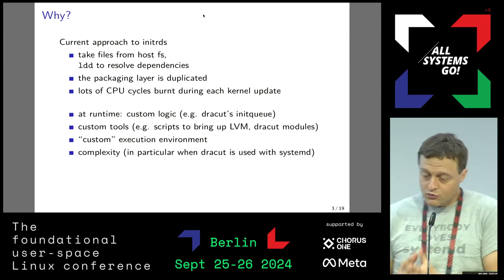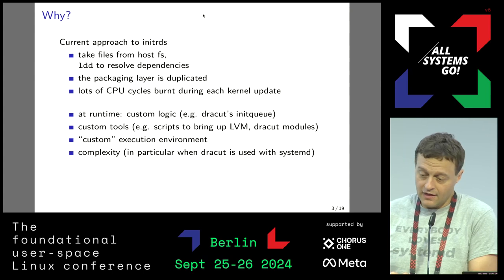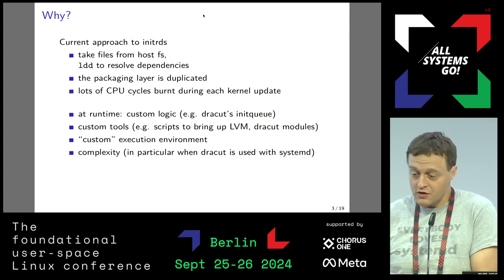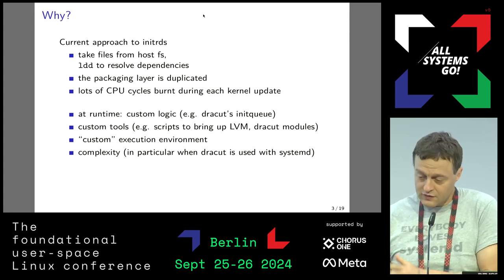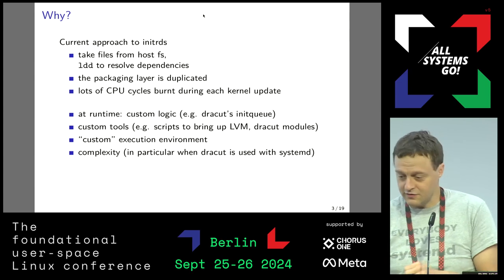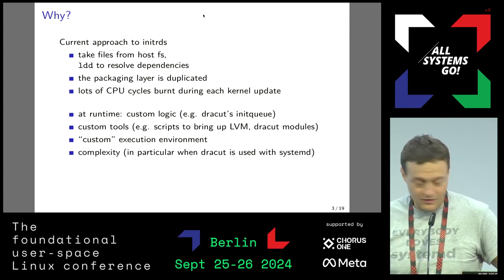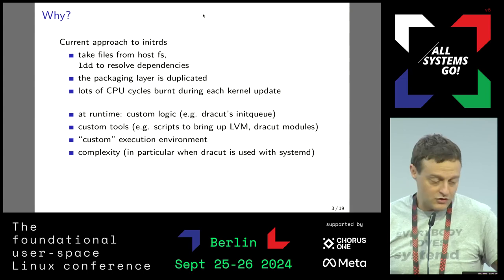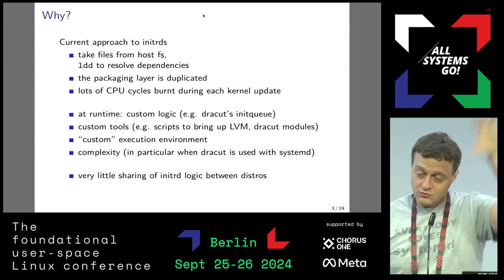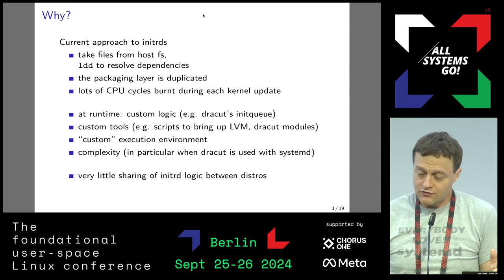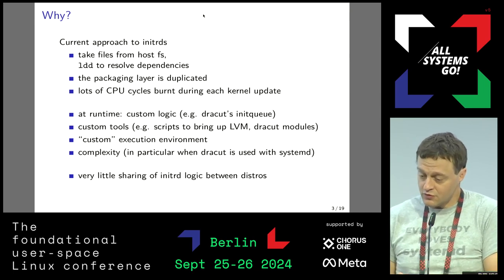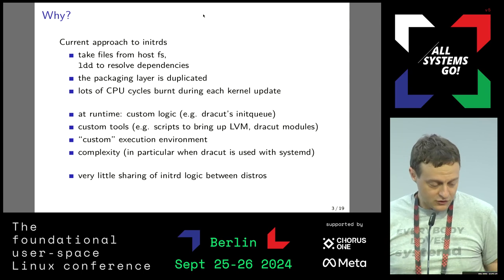Nowadays most people use Systemd in the initRD, but there are remnants of previous states where Systemd wasn't there. So we have an execution queue in Systemd and an execution queue in Dracut, and they kind of fight, or at least duplicate. This complexity makes it very hard to figure out what is going on when something goes wrong.